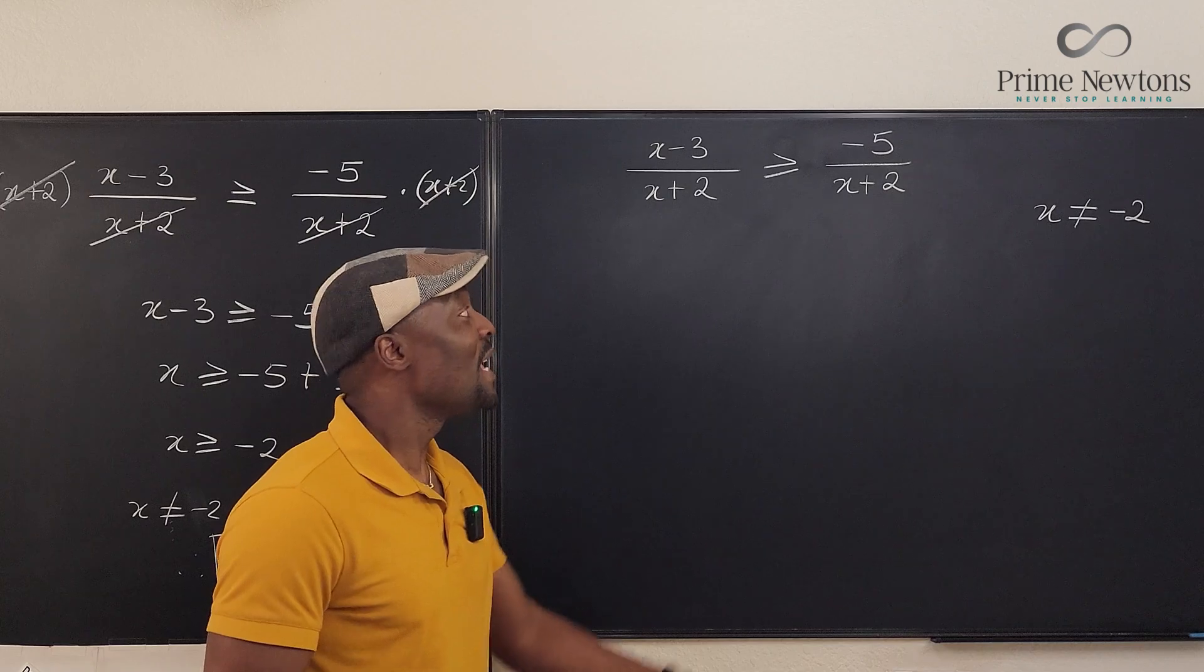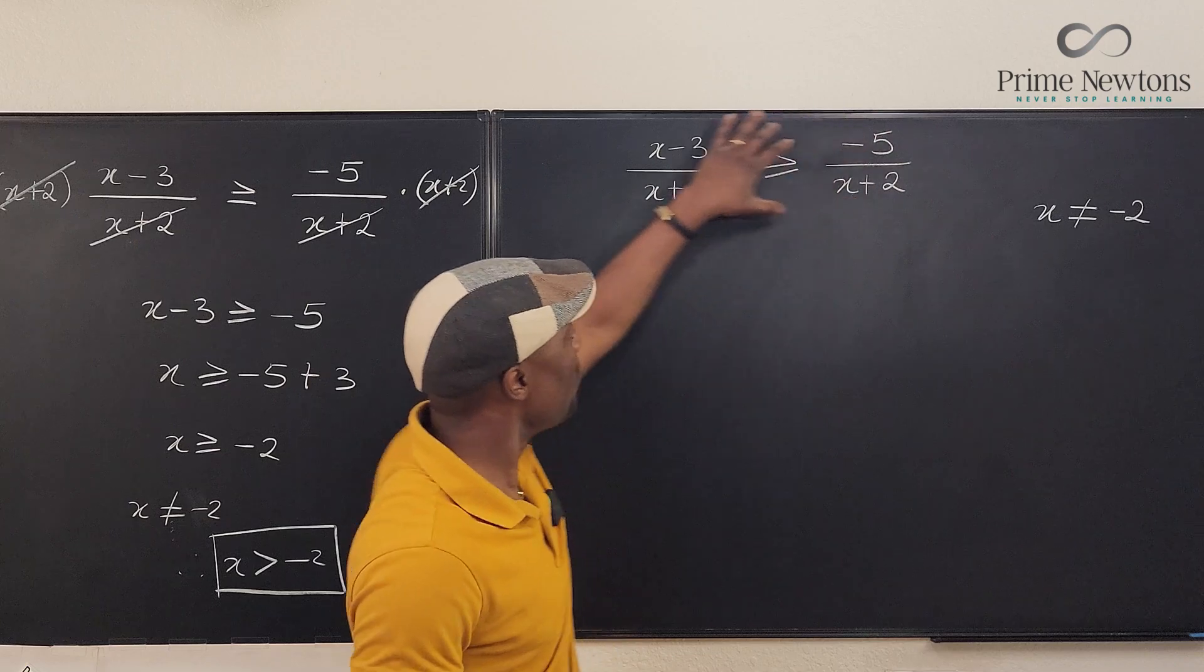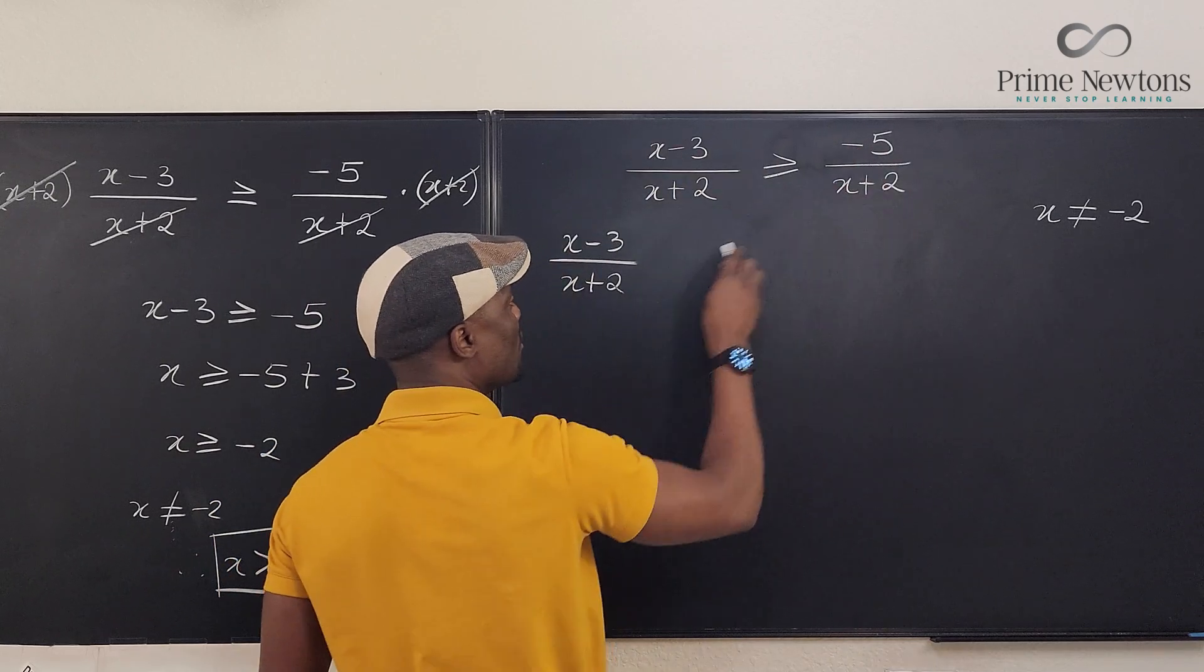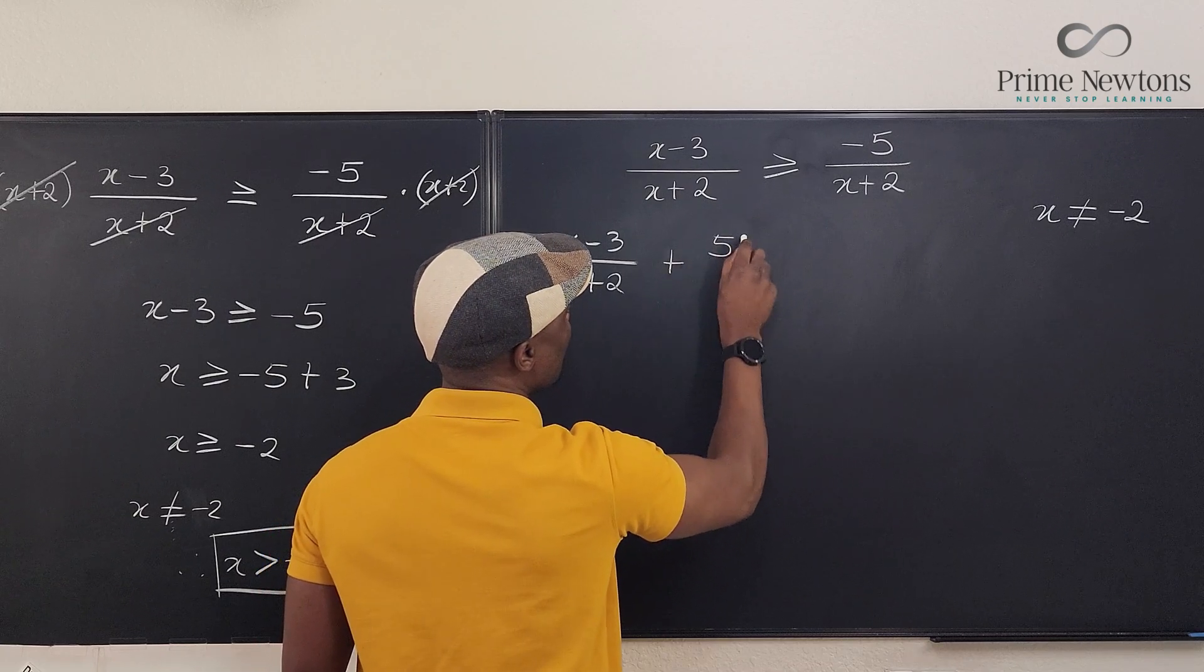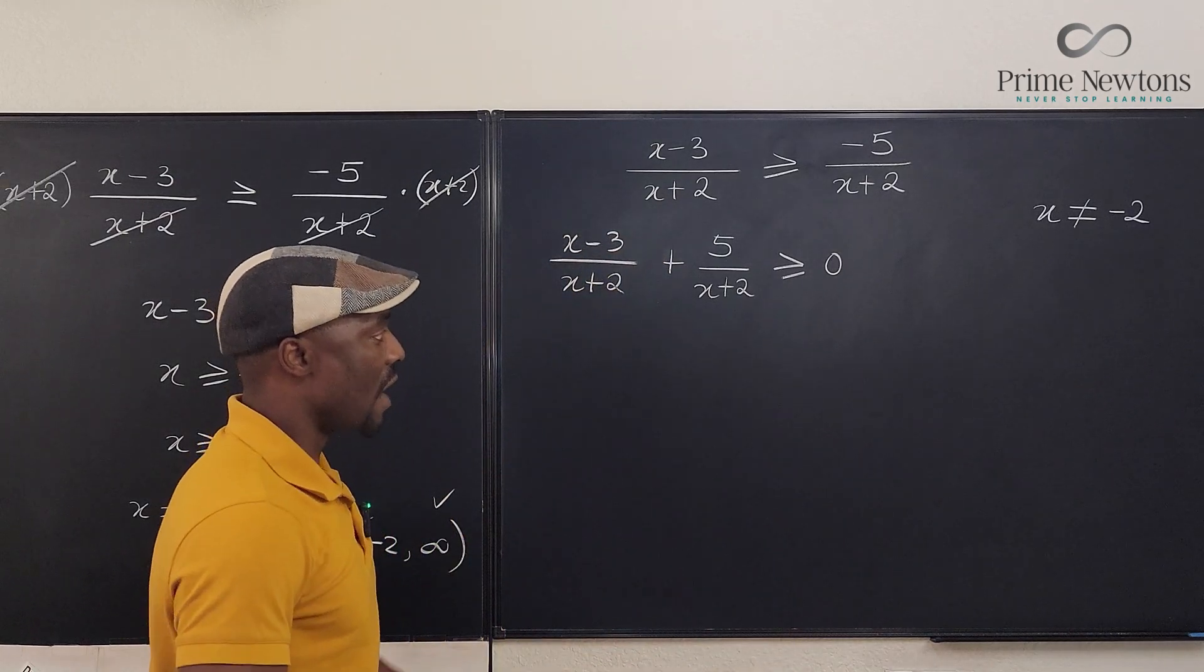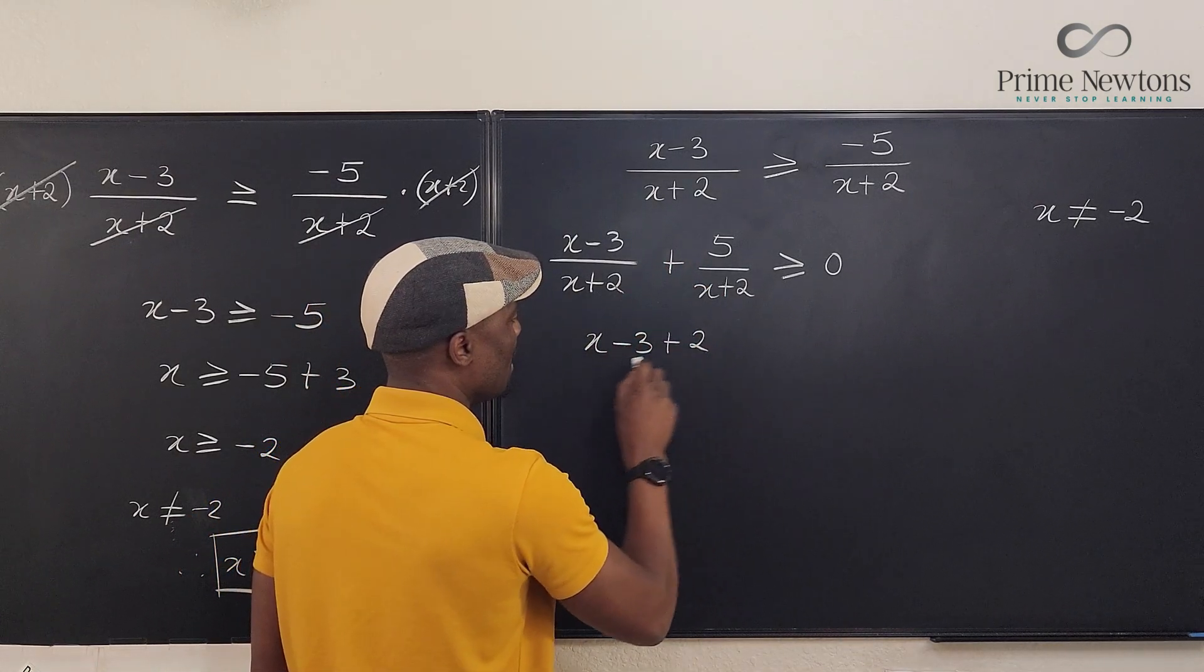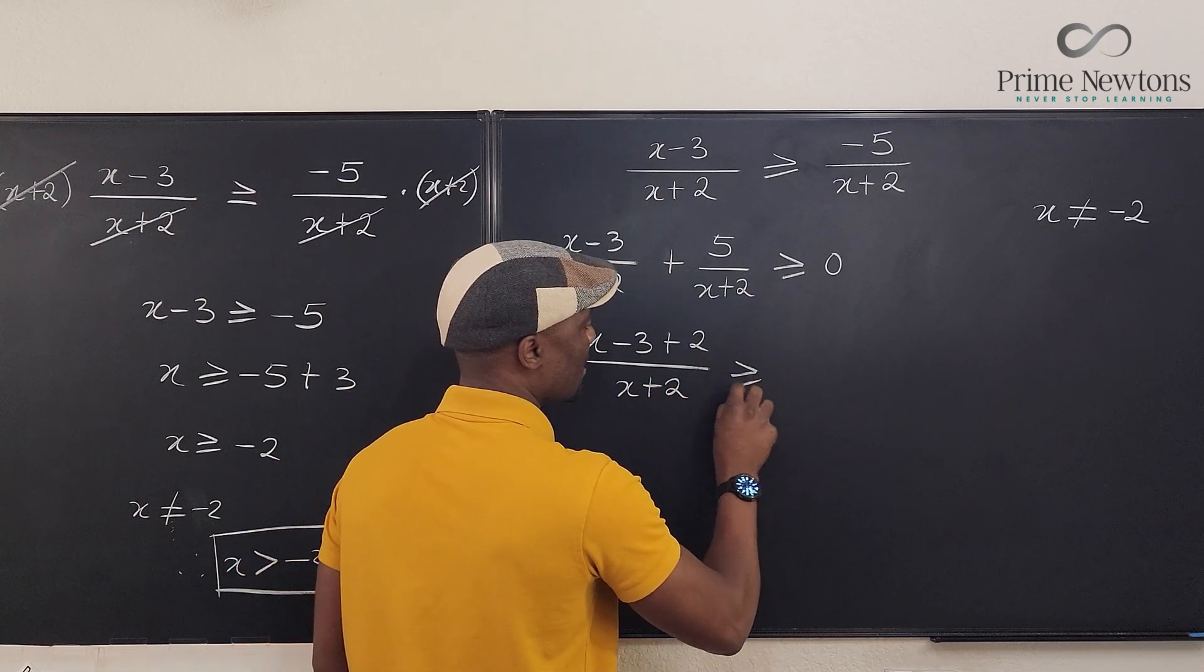Okay, so what I do is not cross multiply. I move everything to one side. So I'm going to move this over here. I'm going to have x minus 3 over x plus 2. When this moves over here, this minus will become a plus. So I'm going to have plus 5 over x plus 2. And what I have left here is going to be 0. Now, these two are the same denominator. So I'm going to put the top together. I'm going to have x minus 3 plus 5, sorry, divided by, same denominator, x plus 2 is greater than or equal to 0.